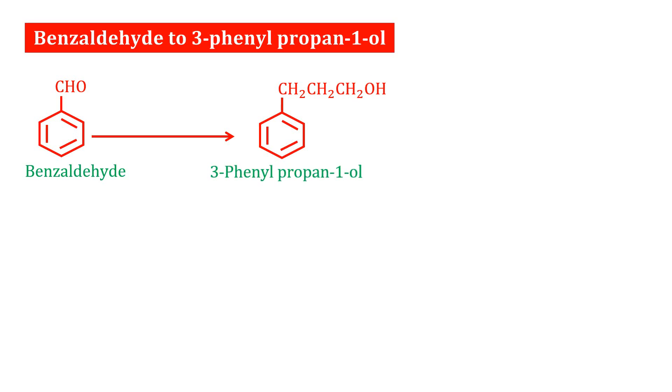Here we have a CHO group, that is an aldehyde. Here we have an OH group at position 1, 2, 3. That is 3-phenyl propan-1-ol.